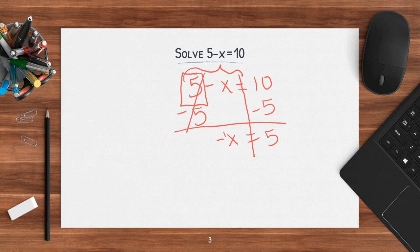What this means is there would be a negative 1x here — essentially. So if I have a number and a variable together, that means I'm multiplying. So from this step I'm going to divide by negative 1. Negative 1 divided by negative 1 cancels out — it's just 1. So I would have x equals — what is 5 divided by negative 1? Negative 5.